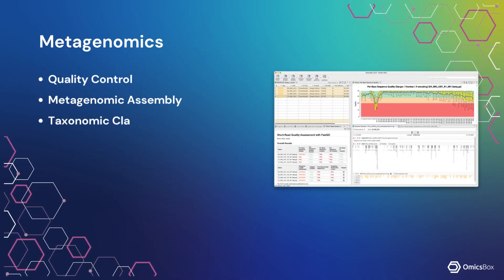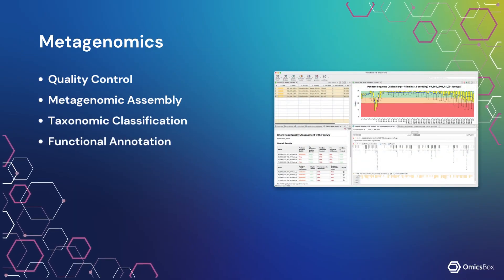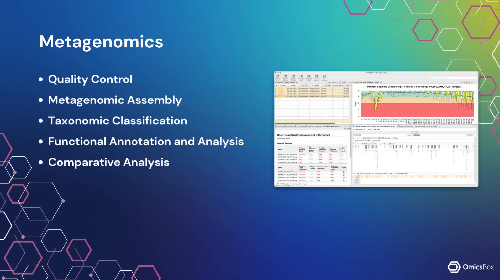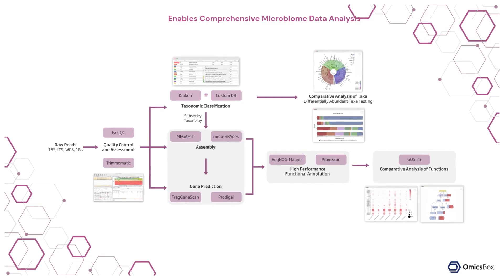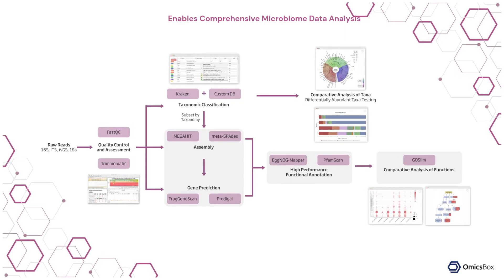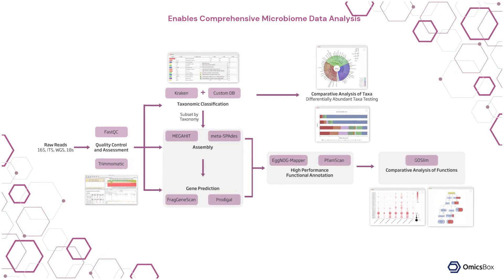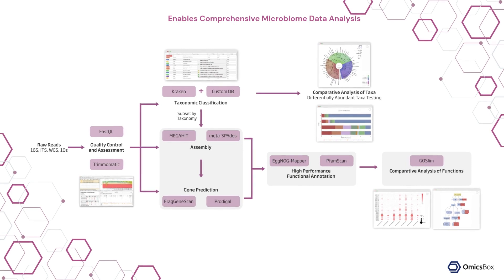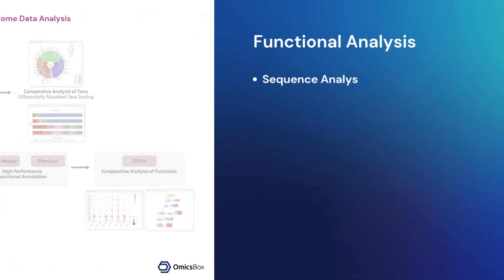Metagenomics provides species-level taxonomic classification and differential abundance analysis of taxa and functions, supporting the study of microbial communities and their ecological or clinical relevance.